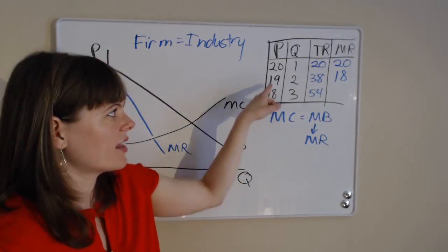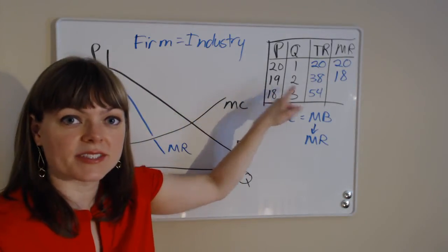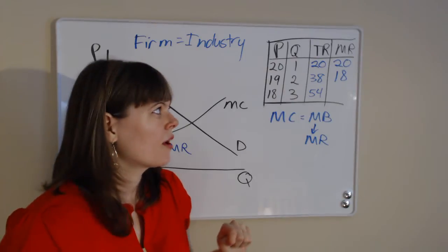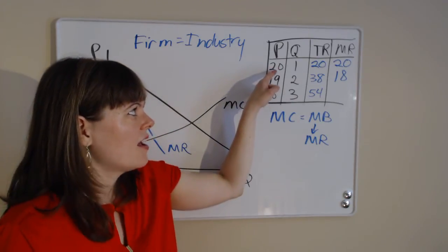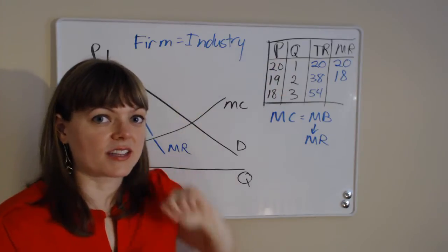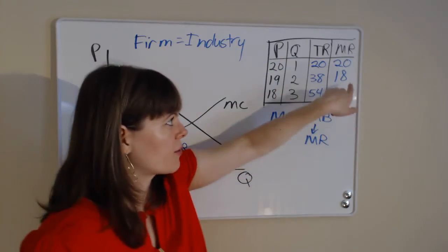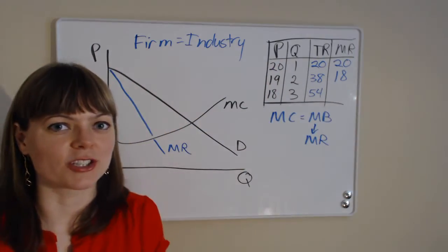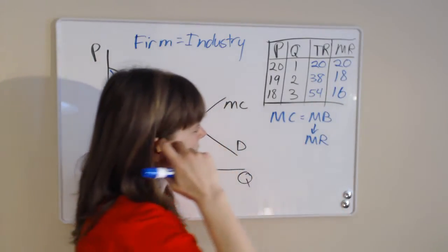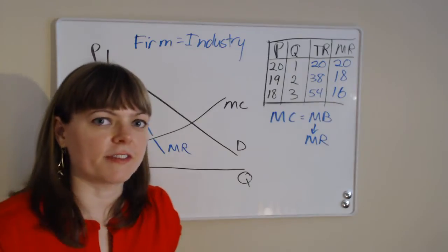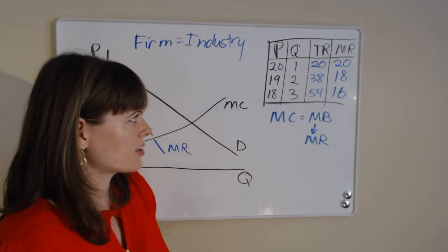And one way of thinking of that is we get this extra $19 from the second person that we sell a cupcake to, but we also have to lower the price of the first person's cupcake from $20 down to $19. So we lose that extra dollar and we only get $18 in marginal revenue. Here, our marginal revenue is going to be $16 going from the $38 to the $54.